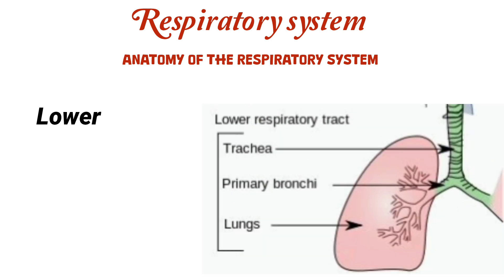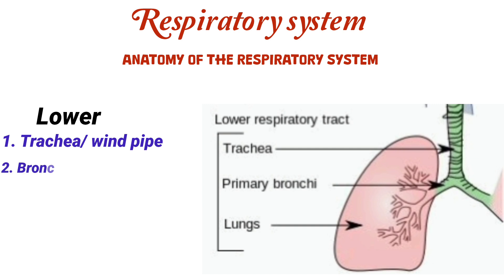The lower respiratory tract includes the trachea, the bronchi, the bronchioles, and the alveoli inside the lungs. The trachea, also called the windpipe, is a tube supported by C-shaped rings of cartilage to keep it open during breathing. It runs down the neck and divides into two primary bronchi, one for each lung.